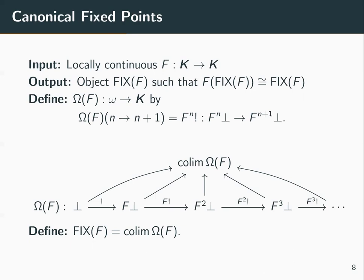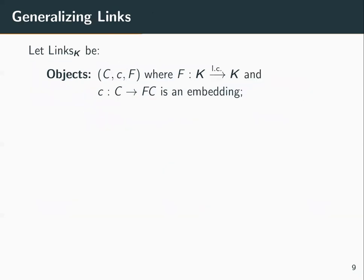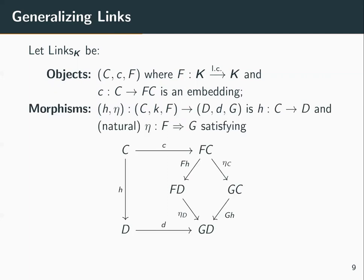We want to explore how fixed points of functors relate to each other — specifically how fixed points generated by different initial links relate. To do so, we define a new category of initial links where objects are triples (C, c, F), where F is a locally continuous functor and c embeds C into F(C). A morphism of links is a pair (H, η) satisfying the diagram on the slide, which gives us just what we need to define morphisms of chains.